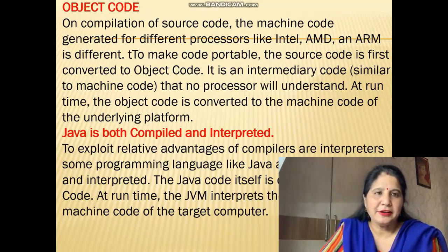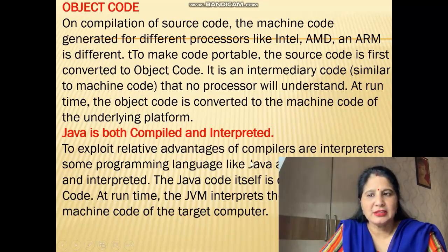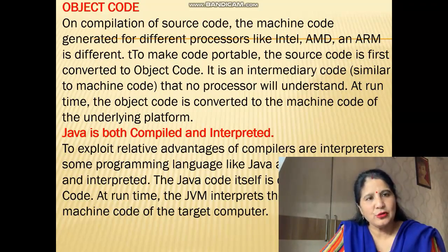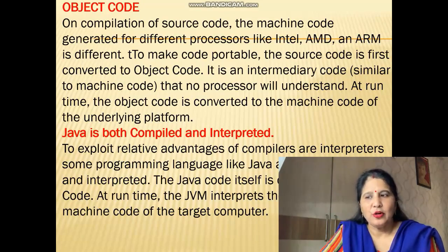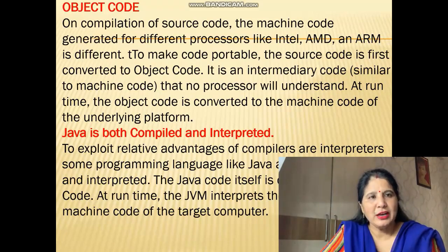Java is both compiled and interpreted. To exploit the relative advantages of both compiler and interpreter, some programming languages like Java are both compiled and interpreted. The Java code itself is compiled into object code. At run time, the JVM interprets that object code into machine code of the target computer. So first, Java compiles the high level code into object code, and then JVM converts that object code into machine code using an interpreter. So Java is both a compiled and interpreted language.